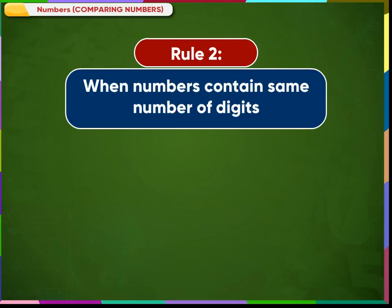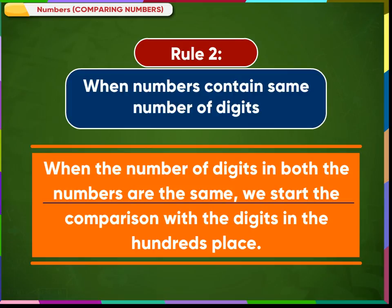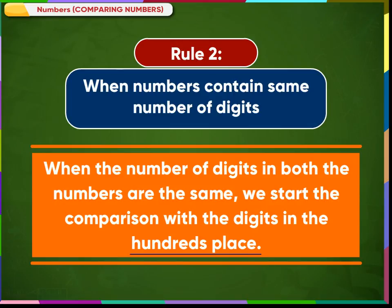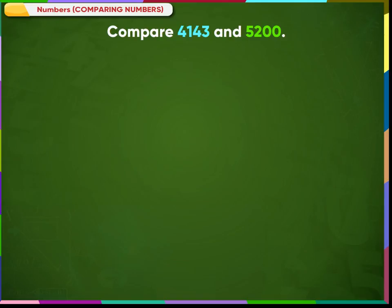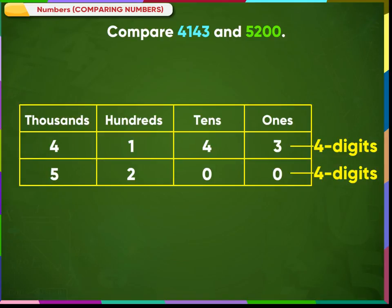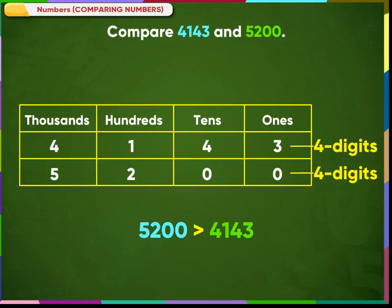Rule number 2: when numbers contain the same number of digits, we start the comparison with the digits in the highest place. For example, compare 4143 and 5200. 5200 has a greater digit in the thousands place. Therefore, 5200 is greater than 4143.